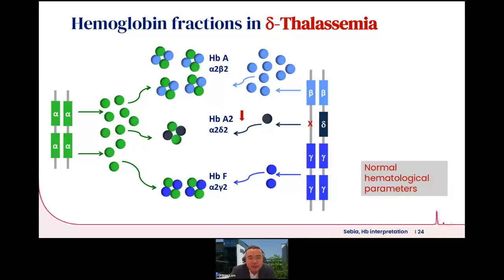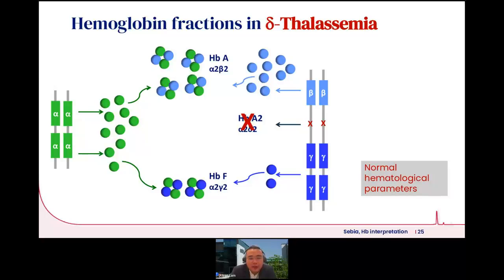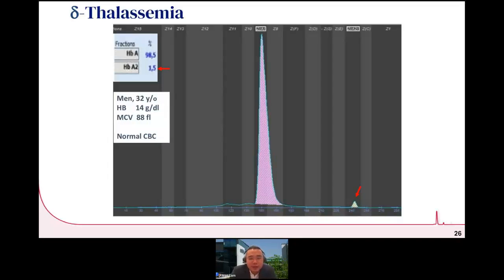In delta thalassemia, delta chain production is reduced, but this is a very mild and insignificant condition because hemoglobin A2 is already present in very small proportions. Even in instances where all delta genes are lost, normal hematological parameters are expected because hemoglobin A2 composition is already so small.